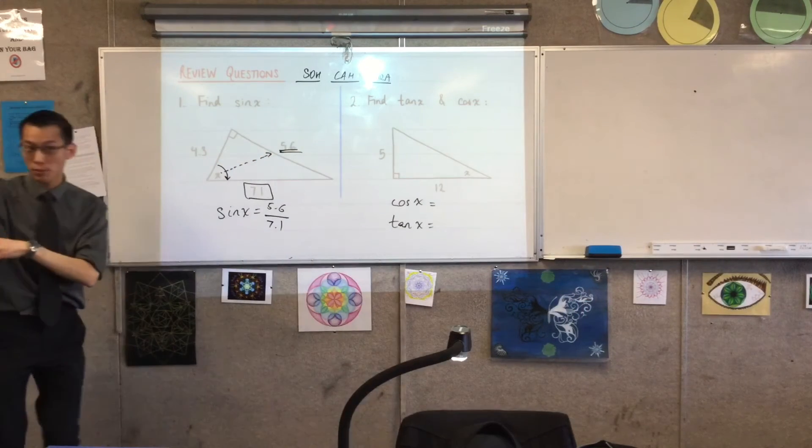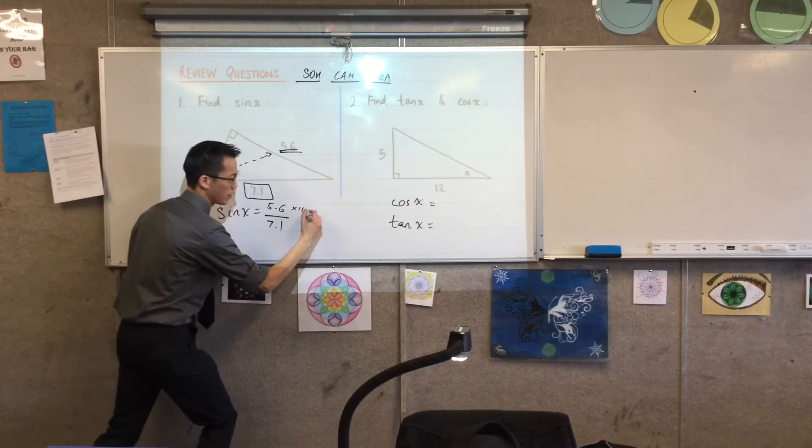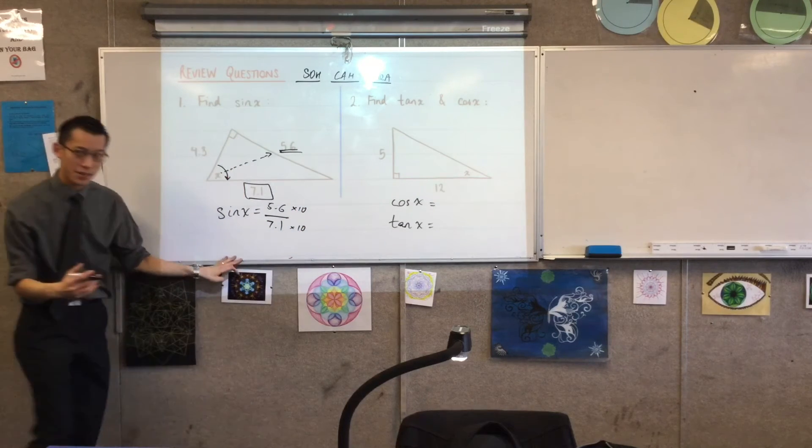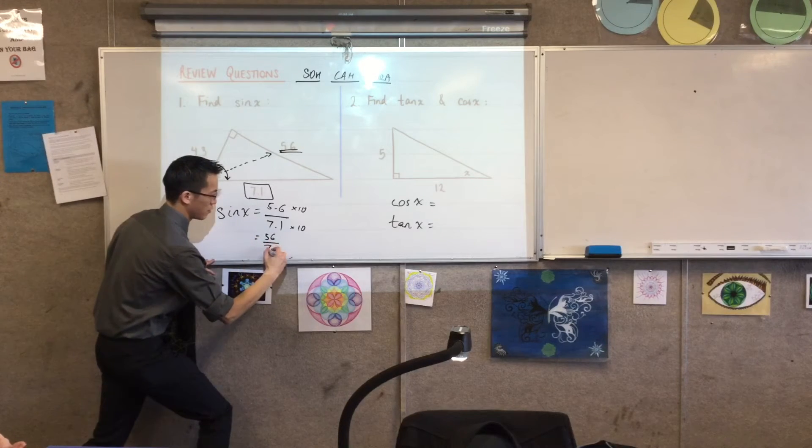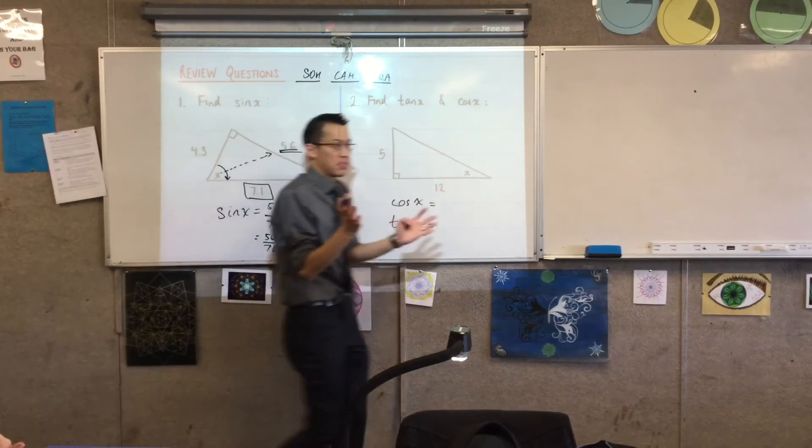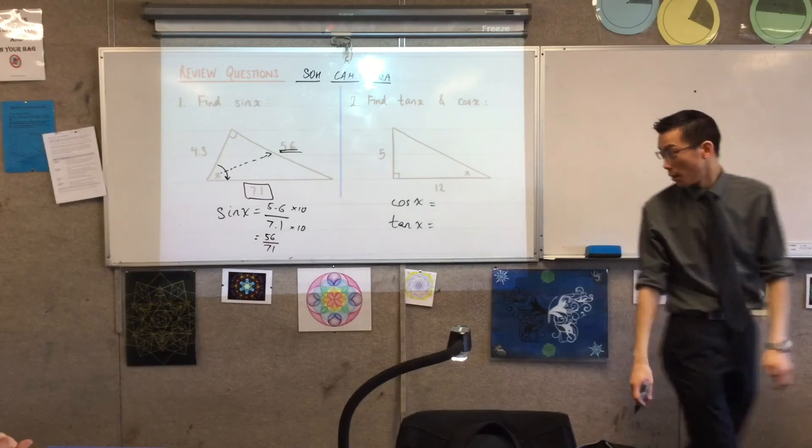If I take the numerator and denominator and multiply it by 10, I'm actually going to write that as well. I haven't changed the fraction, I'm just going to be able to write it without decimal points. 56 over 71, and I think that's it. I don't think you can simplify that any further. I'm happy to be corrected.